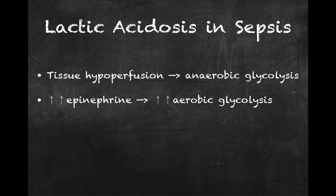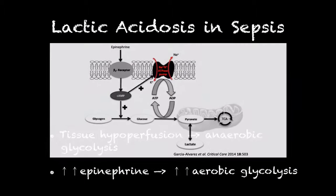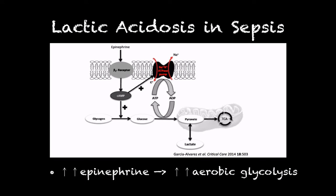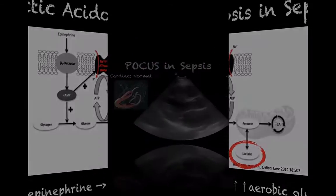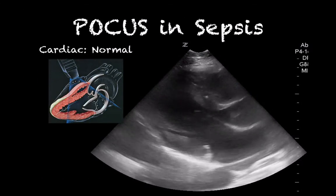The body produces more epinephrine as a stress response, which stimulates the beta-2 receptors, and this leads to unregulated glycolysis producing more pyruvate. The excess pyruvate is then turned into lactate. This may actually be a beneficial compensatory response in times of stress, as the brain and heart can use lactate as a metabolic fuel.